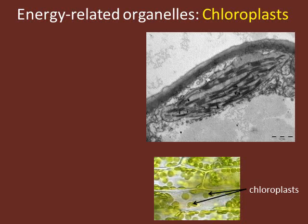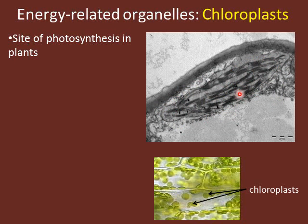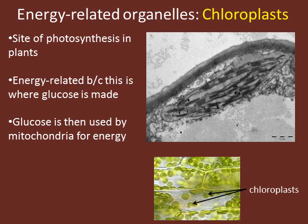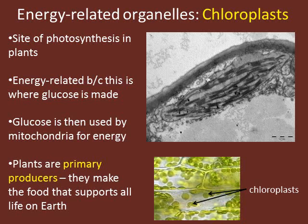Chloroplasts are the organelles in plant cells responsible for photosynthesis. Here you can see a transmission electron micrograph of a single chloroplast with its complex internal structures, as well as the typical appearance of chloroplasts under a regular light microscope. These are energy-related organelles because they produce glucose, which is then used by the mitochondria to produce ATP. Plants are often referred to as primary producers because they synthesize glucose, which is ultimately the source of all energy for all organisms on Earth. Without photosynthesis, we wouldn't have the carbohydrates required for cellular respiration and the energy to power biological reactions.